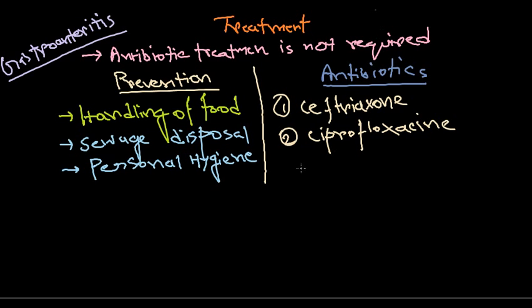So these are the two important antibiotics that we can use to treat Salmonella infection, especially Salmonella typhi infections. Ceftriaxone is a third-generation cephalosporin, and ciprofloxacin is a fluoroquinolone.